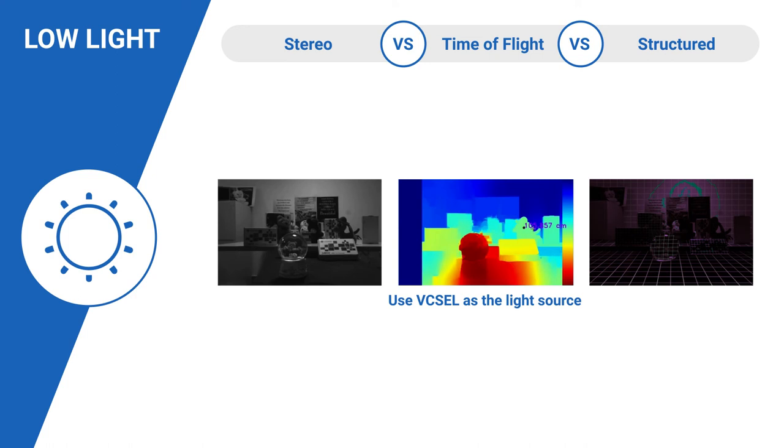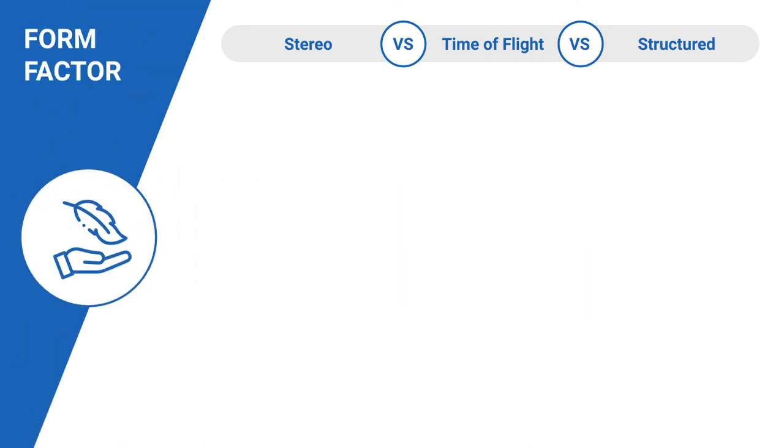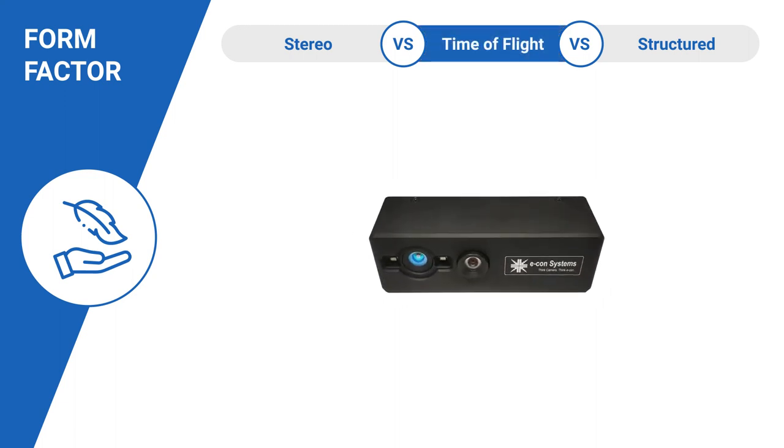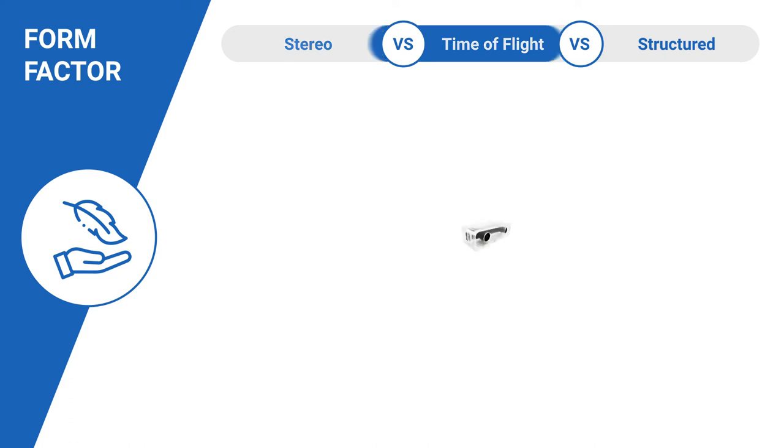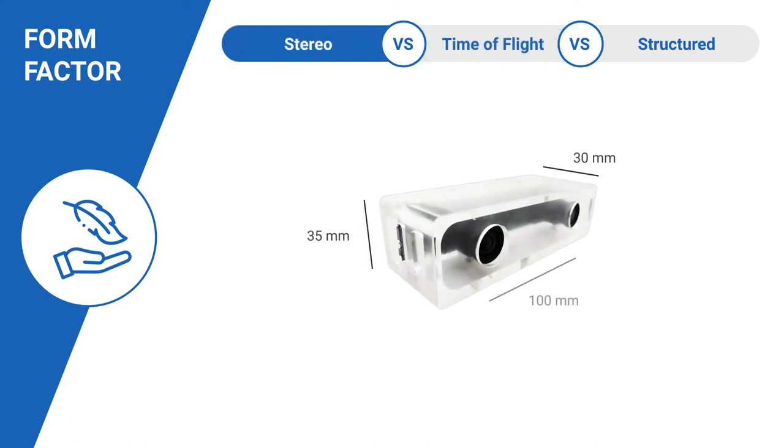Let us now discuss the final parameter, which is compactness. Time-of-flight cameras offer an impressive form factor with their compactness. This is because the sensor and illumination can be placed together, unlike in a stereo camera, where the baseline cannot be reduced beyond a point. Structured light would fall in between time-of-flight and stereo technologies in terms of compactness.